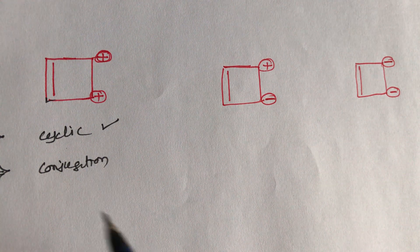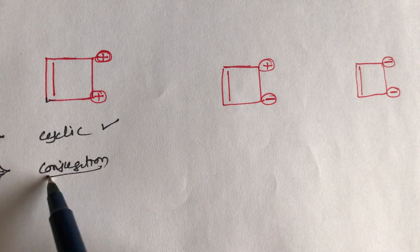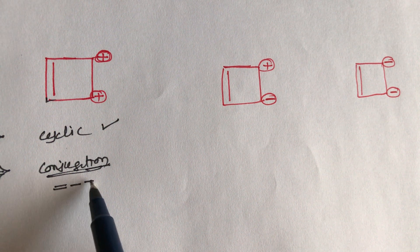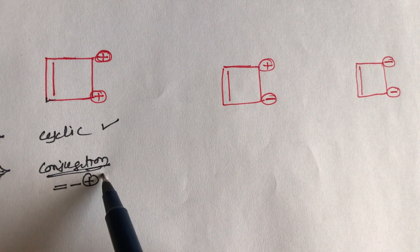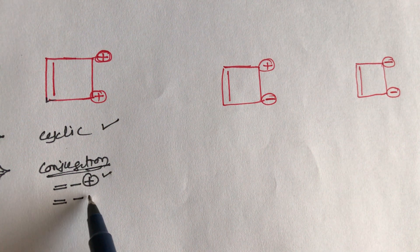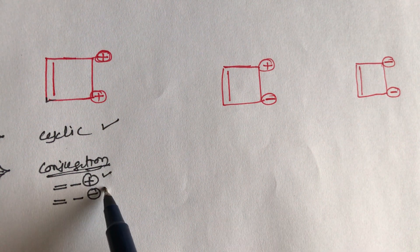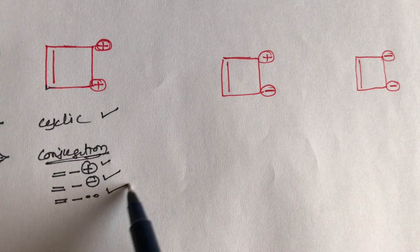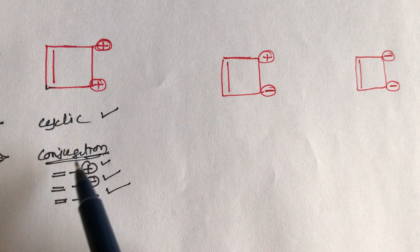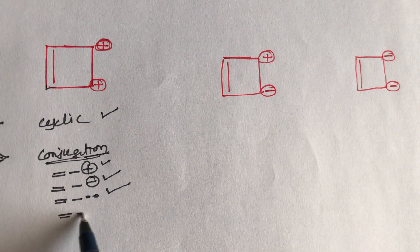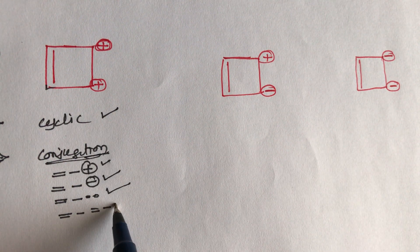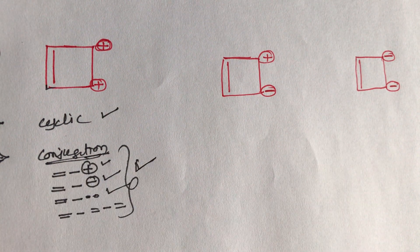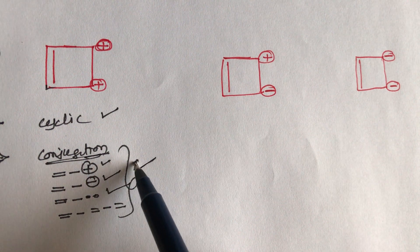What does conjugation mean? Conjugation means: double bond, then single bond, then positive charge — that is also conjugation. Double bond, then single bond, then negative charge — that also satisfies conjugation. Double bond, then single bond, then lone pair — that is also conjugation. And alternating double bonds are also conjugation.